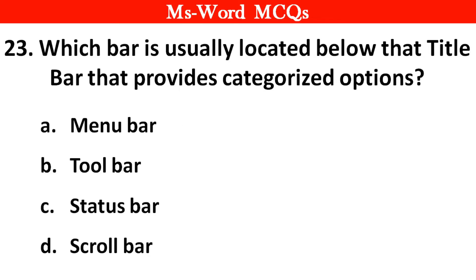Which bar is usually located below the title bar that provides categorized options? Options: A. Menu Bar, B. Toolbar, C. Status Bar, D. Scroll Bar. Right answer is option A: Menu Bar.